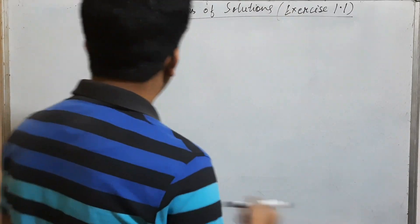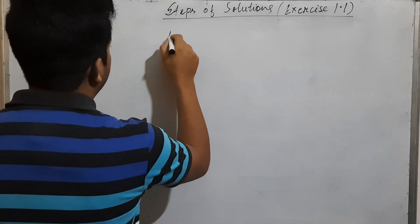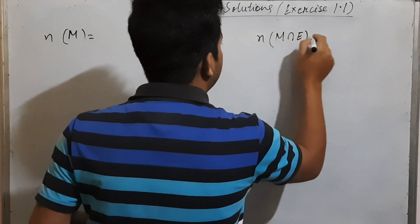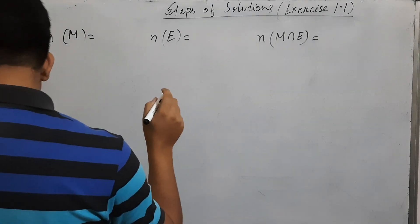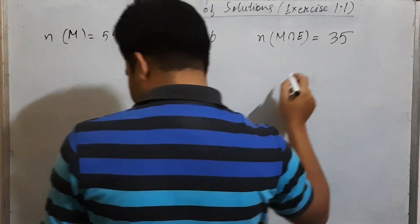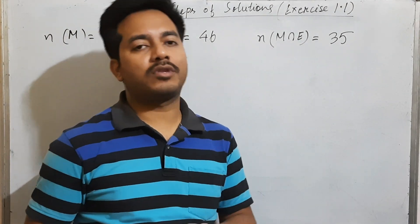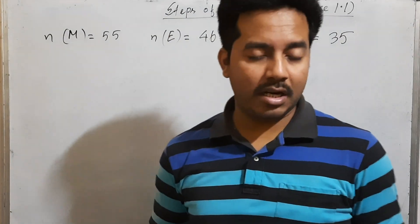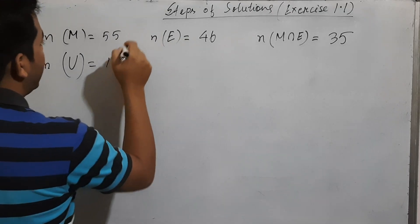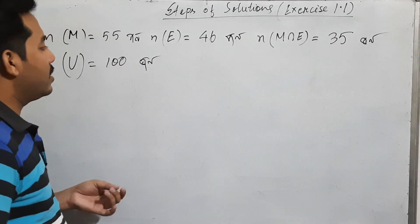I don't want to write mathematics, I don't want to write the number of M. I don't want to write the number of E. So what do you think about mathematics? Mathematics is 55, mathematics is 56, mathematics is 35. You don't want to write all the animals in English. When I get the number, I think we are going to write the number. I will be doing the number of tests.